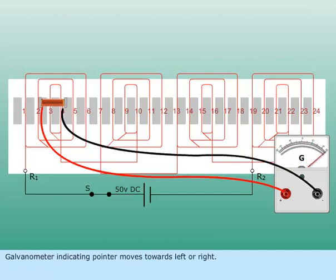Galvanometer indicating pointer moves towards left or right. Suppose the galvanometer indicating pointer moves towards left. Mark that pole as L.